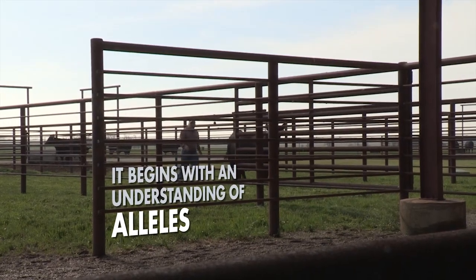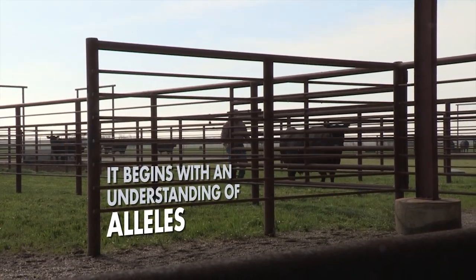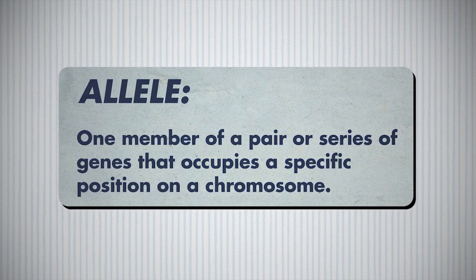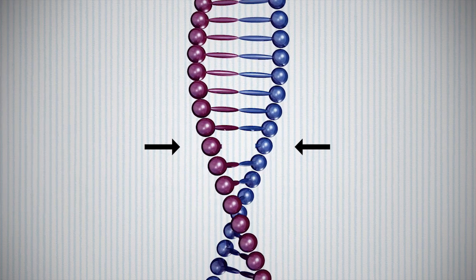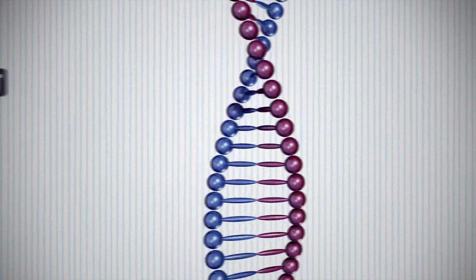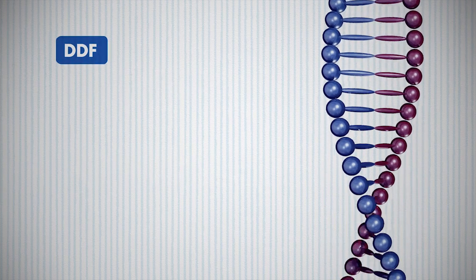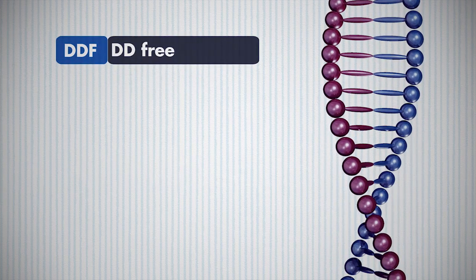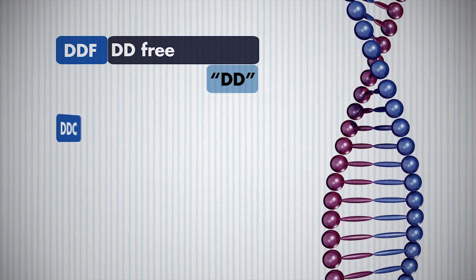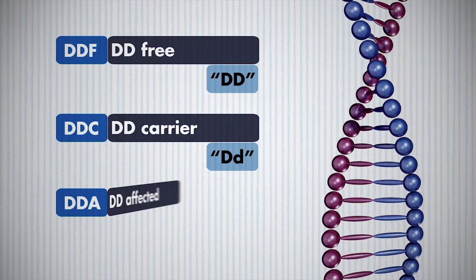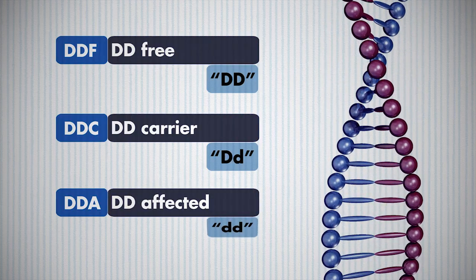It really begins with an understanding of alleles. An allele is one member of a pair or series of genes that occupies a specific position on a chromosome. Each parent contributes one copy of the allele to complete the gene or gene sequence. Alleles can come in two forms — dominant or recessive. In the case of DD, a DDF animal, or DD-free, is designated as capital D, capital D. A DDC, or DD carrier animal, is designated as capital D and little d. And a DDA, or DD affected animal, is designated as little d and little d.